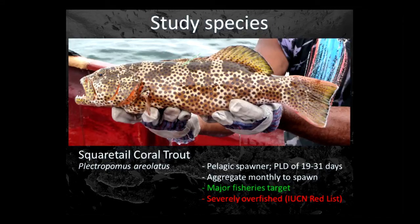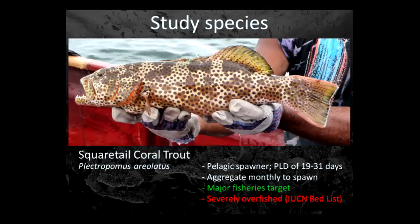This is a study we did in Manas in Papua New Guinea on the square-tailed coral trout, one of the many Plectropomus species in the Indo-Pacific. Larvae spend about 25 days out in the open water. They aggregate monthly at predictable locations to spawn, so fishermen know exactly where they are — they're a really rich target for fishing. It's a major fisheries target and also one of the big targets for the live reef food fish trade, where boats come from Asia, fish these aggregations, and take the fish live to Hong Kong. It is severely overfished throughout its range.